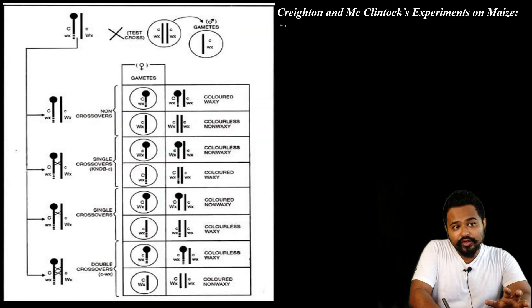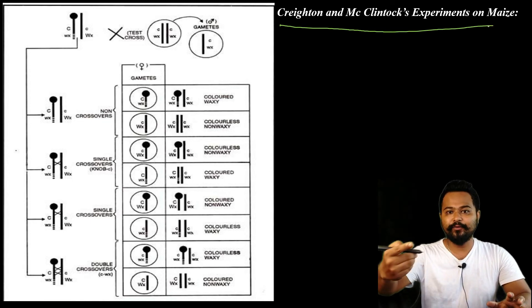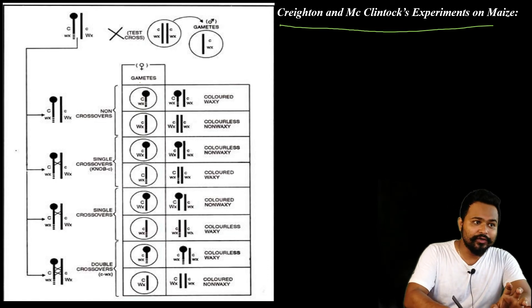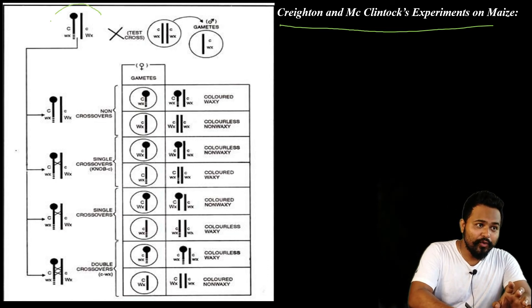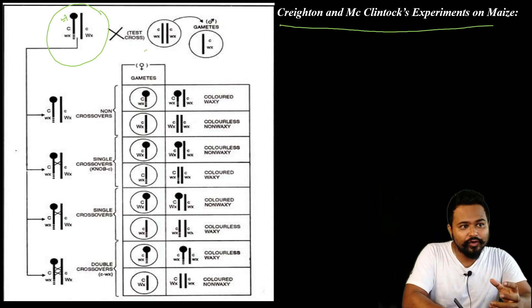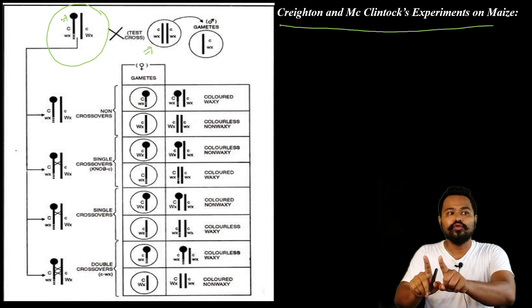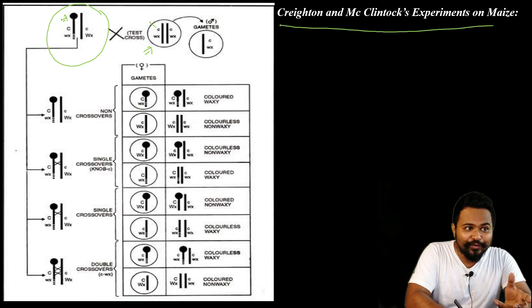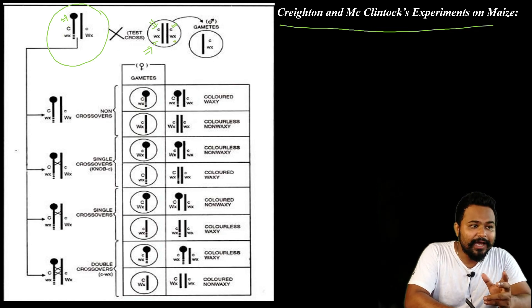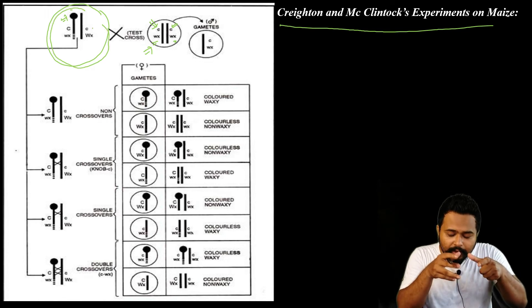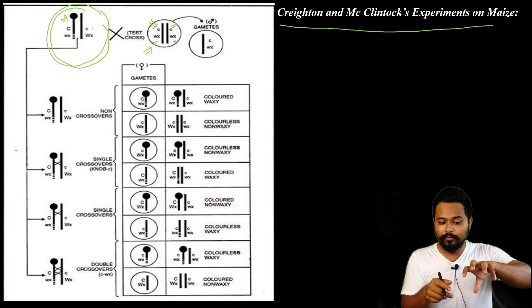Next is the Creighton and McClintock experiment. This is a similar type of experiment — it is the cytological proof that crossing over actually occurs. This involves a chromosome with a knob-like structure. It is a test cross with a recessive parent. The genes involved are C, W — it's a small condition, but remember, this condition is a knob-type structure visible under a microscope.